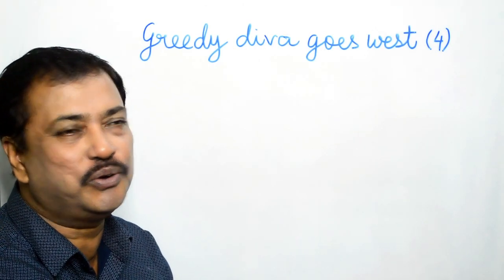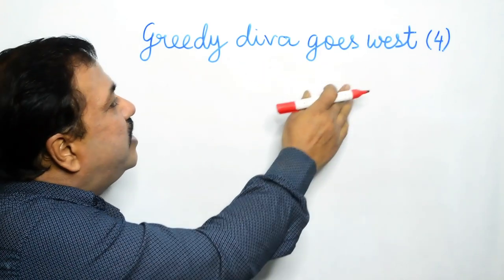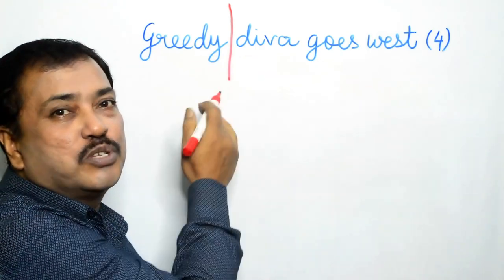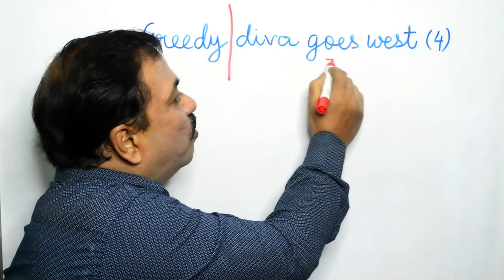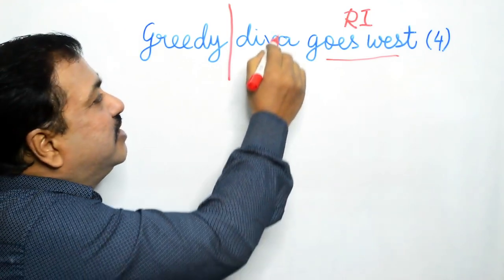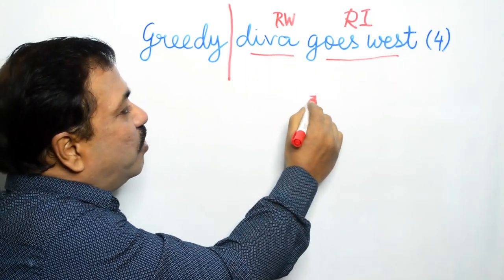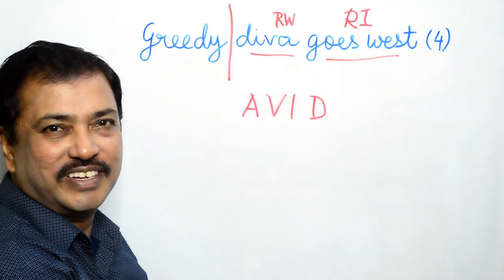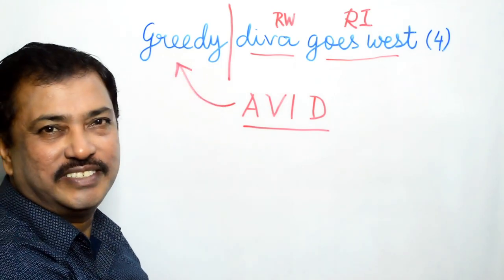So let's look at our first clue: Greedy diva goes west. Now diva is a celebrated female opera singer. Goes west is the reversal indicator, and the reversible word is diva. So diva goes west, from east to west. We write diva and what is this? Avid. It is the synonym of greedy, which is our definition.